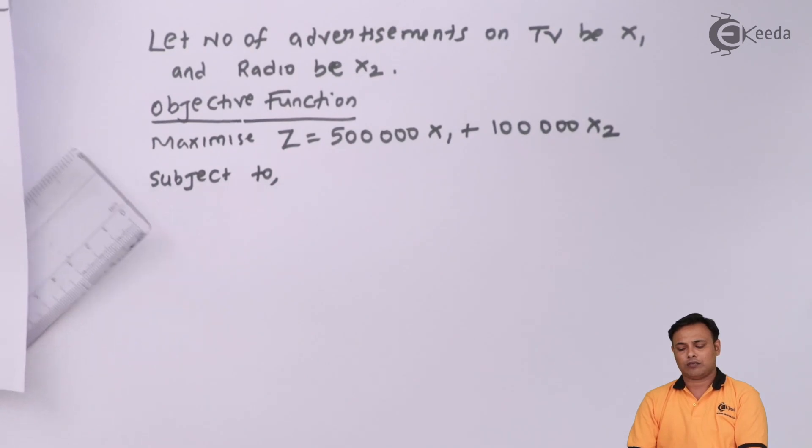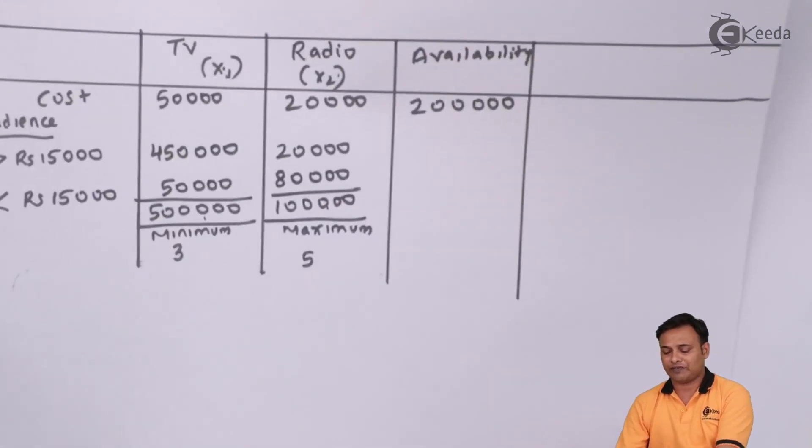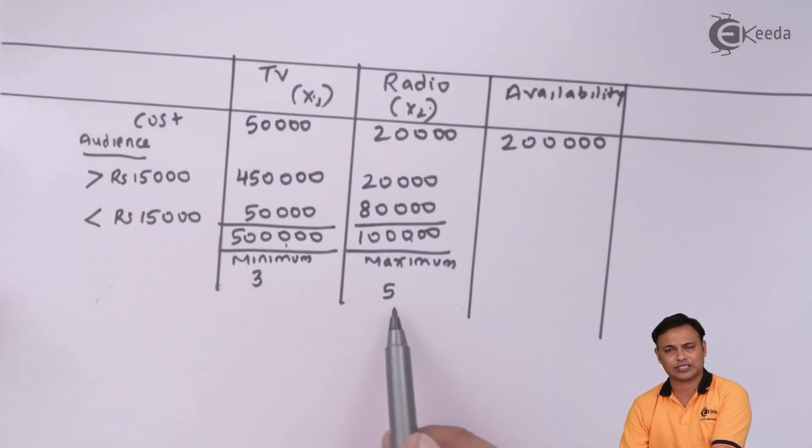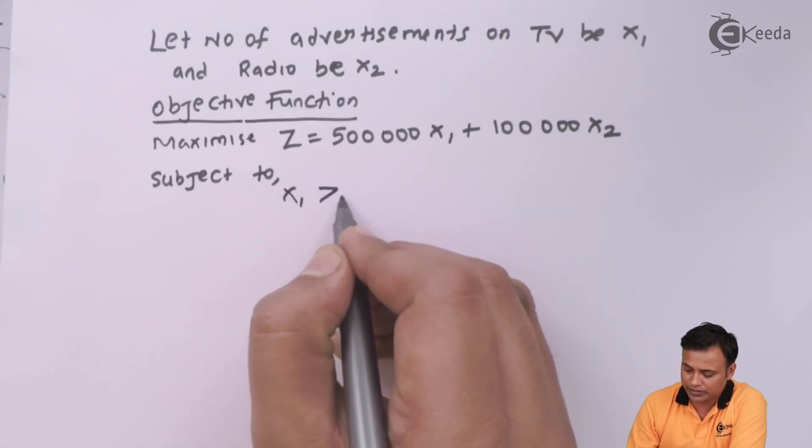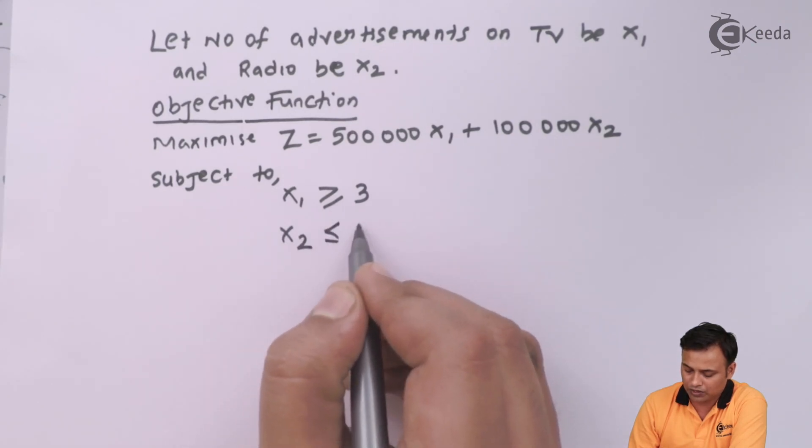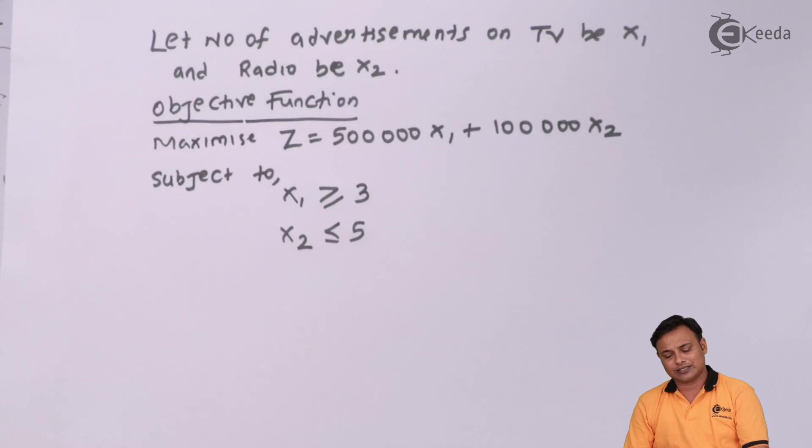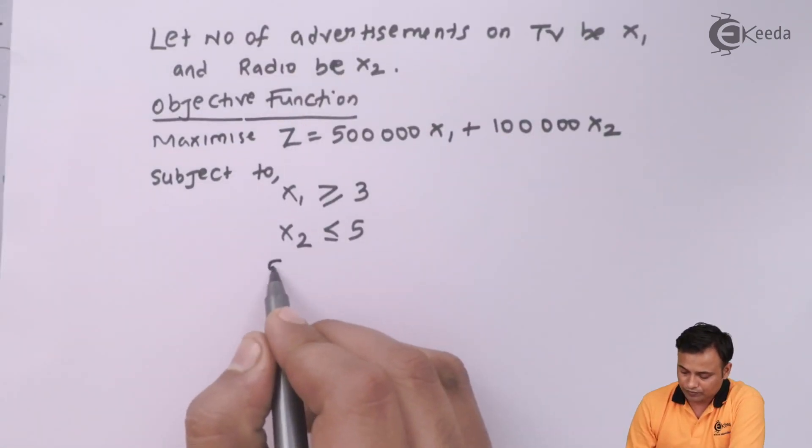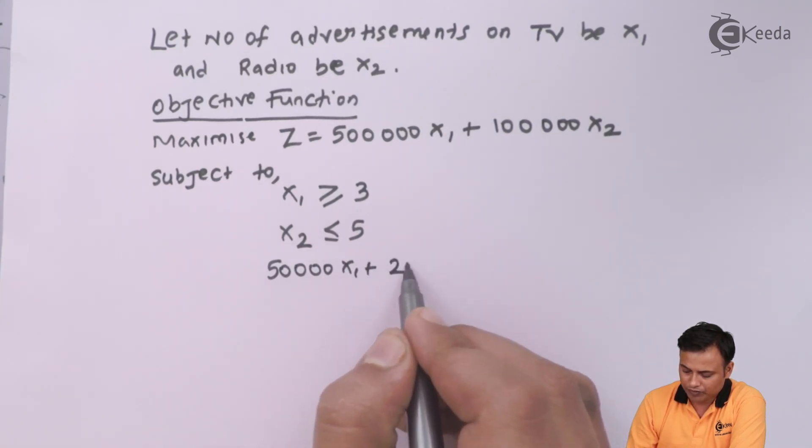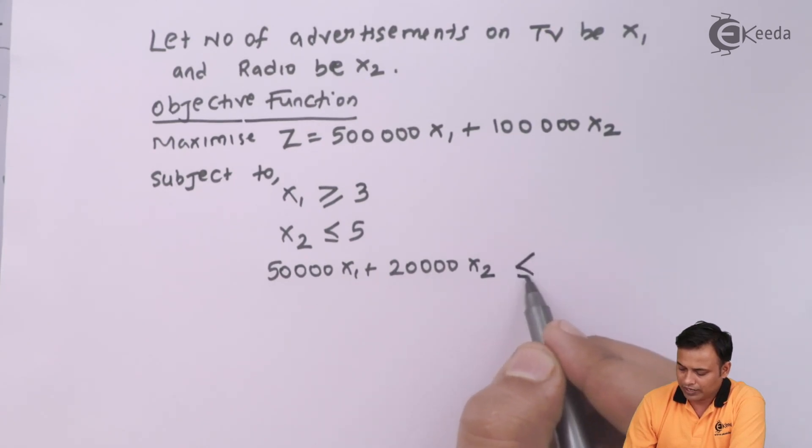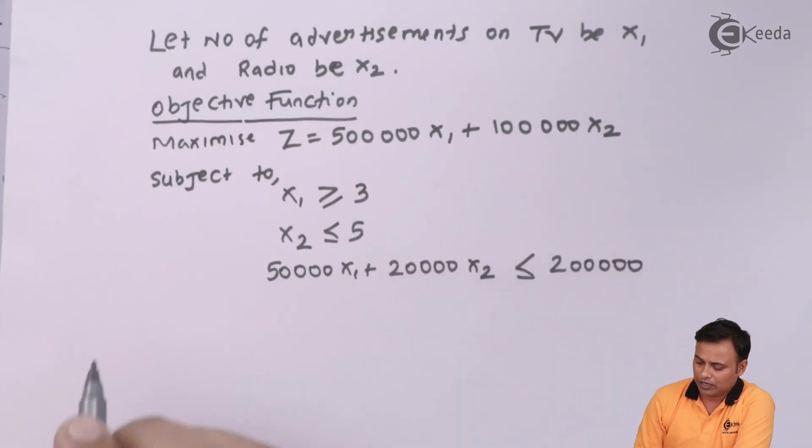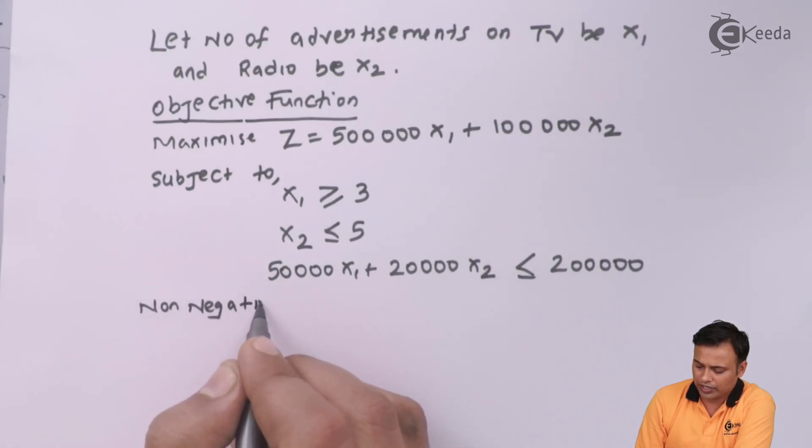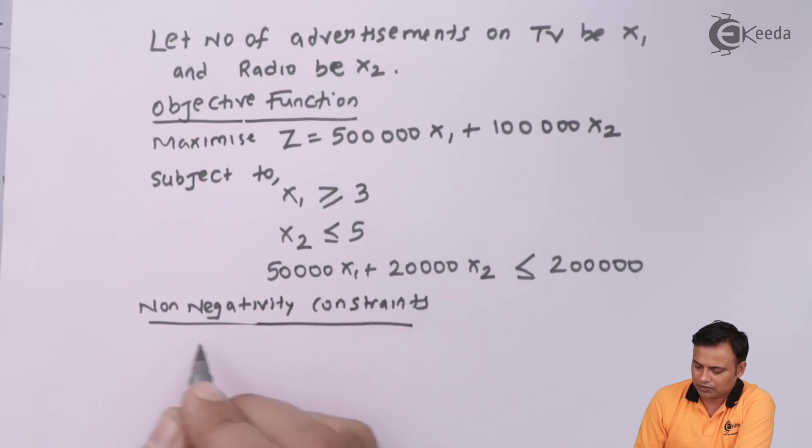Subject to what are my constraints now? My first and foremost two constraints that are specified in the question is that there must be minimum 3 advertisements on TV and maximum 5 on the radio. So x1 should be more than or equal to 3 and x2 should be less than equal to 5. And then we have a budget constraint or the cost constraint that my cost will be 50,000 into x1 plus 20,000 into x2, less than equal to my total budget is 2,00,000. And then I will note down the non-negativity constraints which are x1 more than equals to 0 and x2 more than equals to 0.